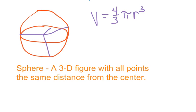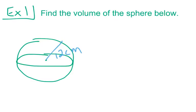Let's take a look at a few examples of how we can find the volume when we're given the radius of a sphere. For our first example, we're told to find the volume of the sphere below. The sphere has a radius of 12 centimeters — and it turns out that a professional men's basketball has a radius of 12 centimeters. So, we are going to be finding the volume of a professional men's NBA basketball.